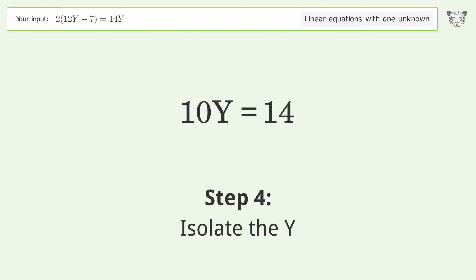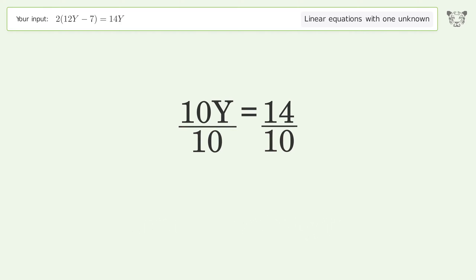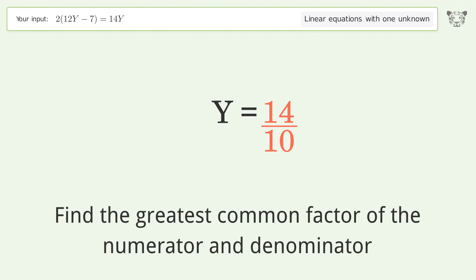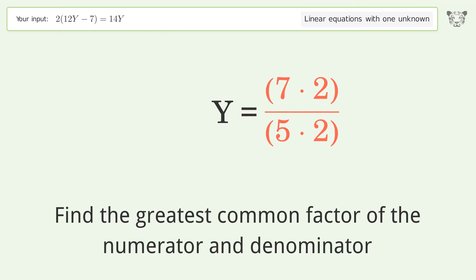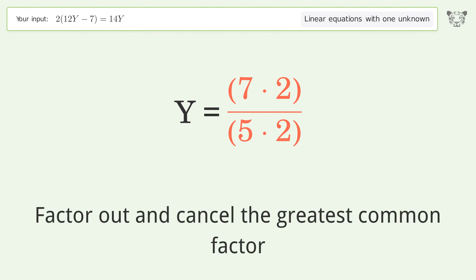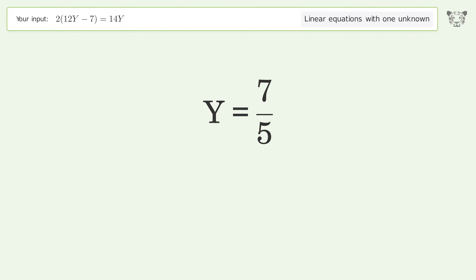Isolate the y by dividing both sides by 10. Simplify the fraction by finding the greatest common factor of the numerator and denominator. Factor out and cancel the greatest common factor, and so the final result is y equals 7 over 5.